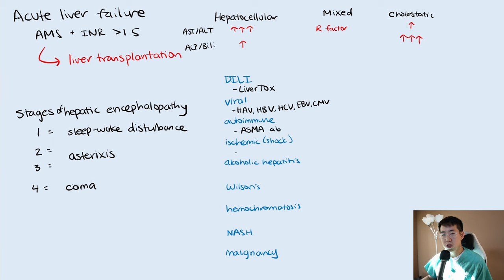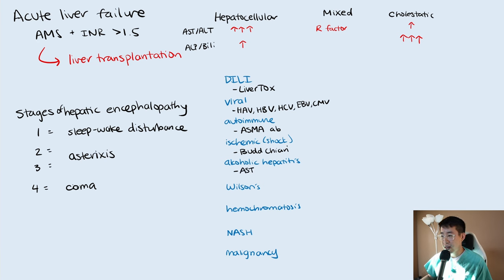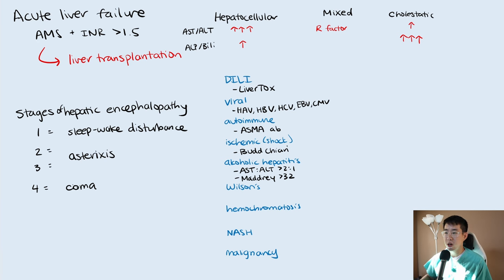For ischemic or shock liver, this includes things like Budd-Chiari syndrome, and typically the patient will have a history of being severely hypotensive or in cardiogenic shock. For alcoholic hepatitis, remember to look for an AST to ALT ratio of greater than 2:1. If the patient is receiving treatment, you calculate the Maddrey discriminant function score, and if it's greater than 32, the patient may benefit from steroids, though the data is somewhat mixed.